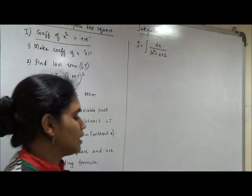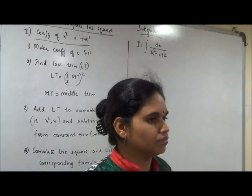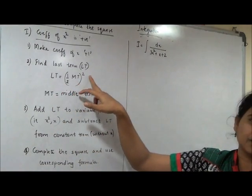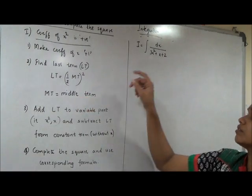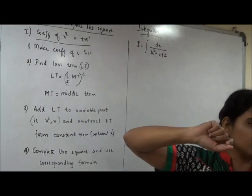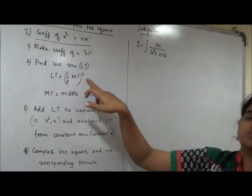Once you do that, second step is you are supposed to find the last term. Last term how you find out is, half of middle term whole bracket square. And middle term is x, the coefficient of x. That is the middle term. Last term is half of middle term whole bracket square.